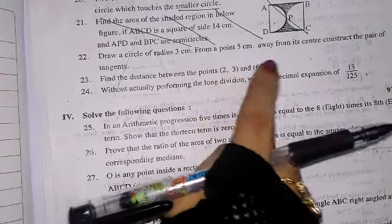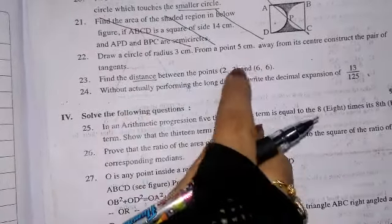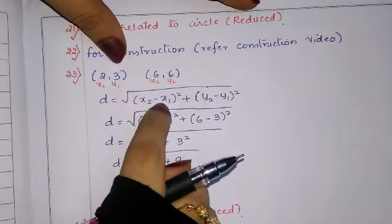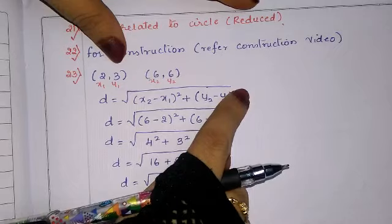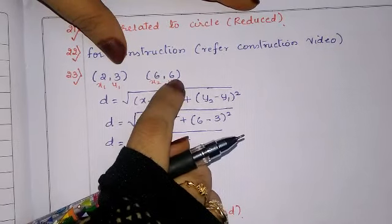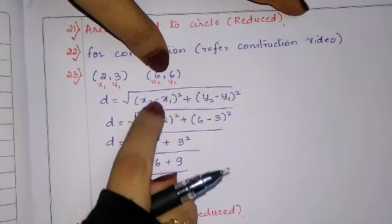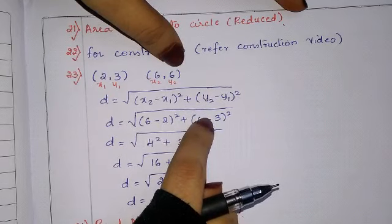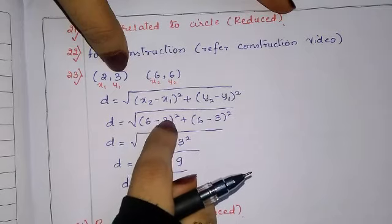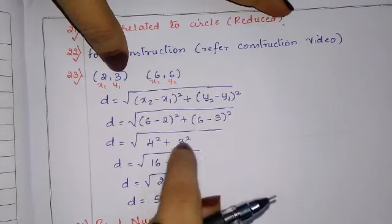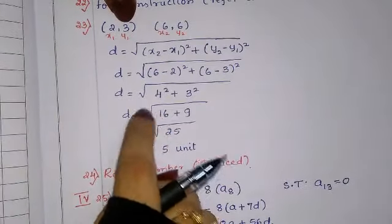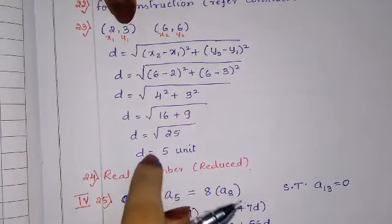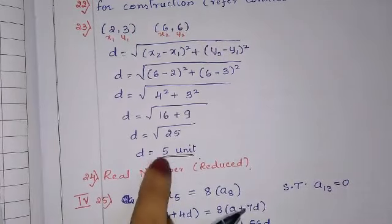Question number 23: find the distance between the points (2, 3) and (6, 6). Using the distance formula: d = √((x2−x1)² + (y2−y1)²) = √((6−2)² + (6−3)²) = √(16 + 9) = √25 = 5 units. The distance is 5 units.